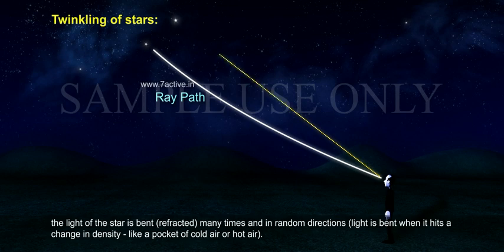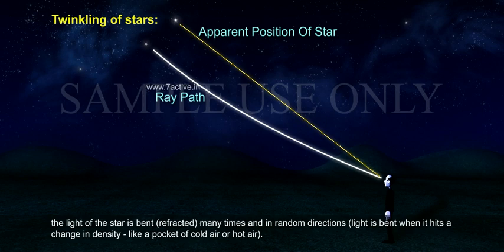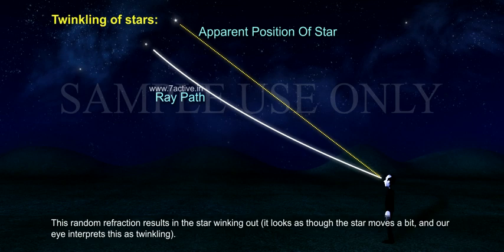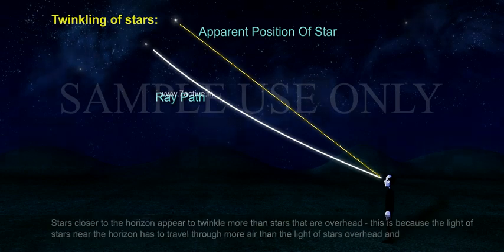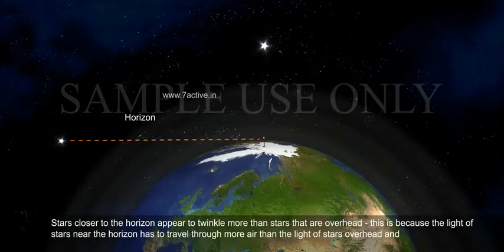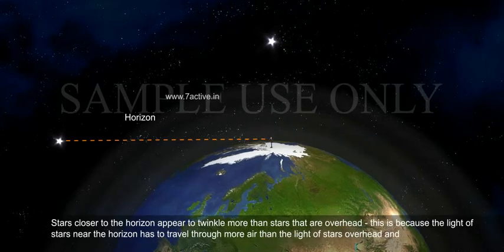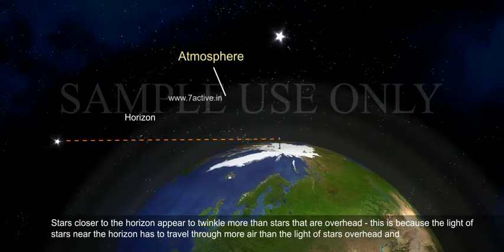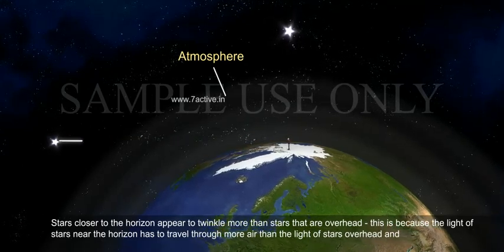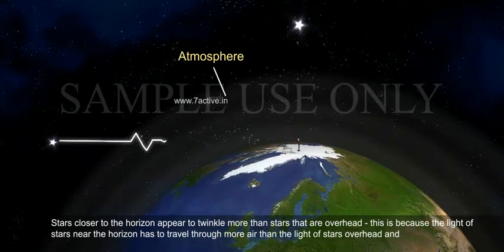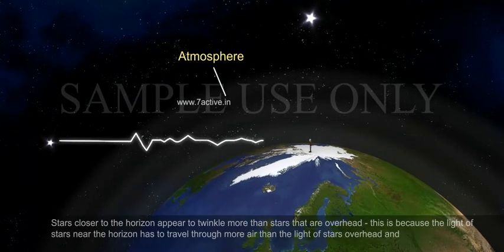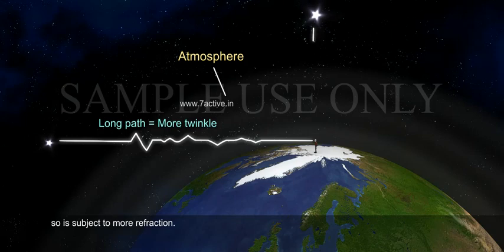Light is bent when it hits a change in density, like a pocket of cold air or hot air. This random refraction results in the star winking out. It looks as though the star moves a bit, and our eye interprets this as twinkling. Stars closer to the horizon appear to twinkle more than stars that are overhead, because the light of stars near the horizon has to travel through more air, and so is subject to more refraction.